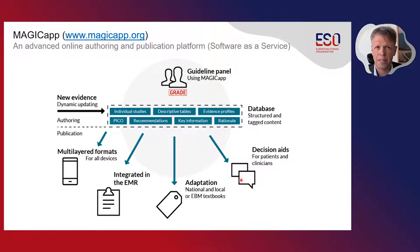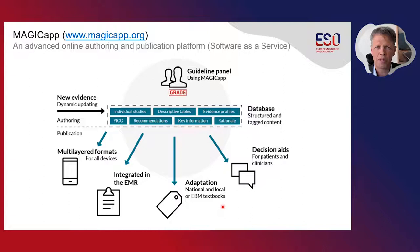MAGIC App further allows us to adapt guidelines to the specific context of a country like Germany, Norway, or Hungary. The important entities — and this is important to understand — are the individual recommendations, not the entire guideline.